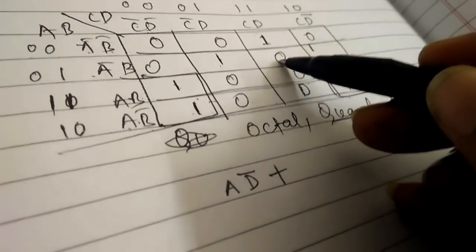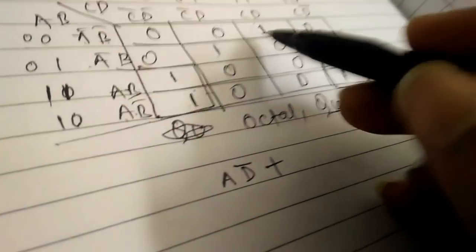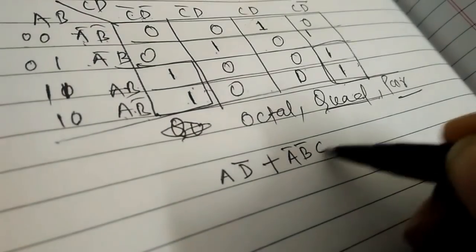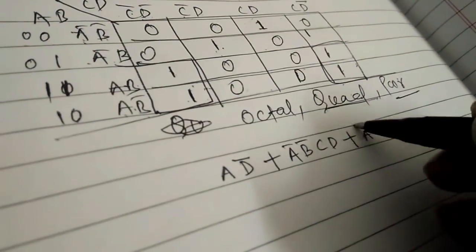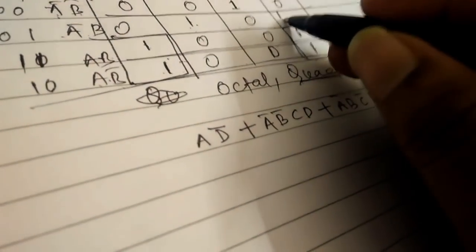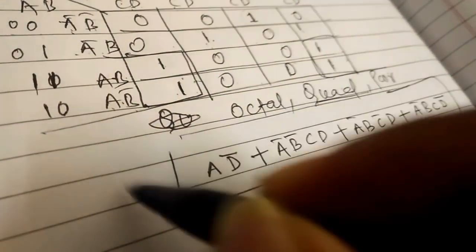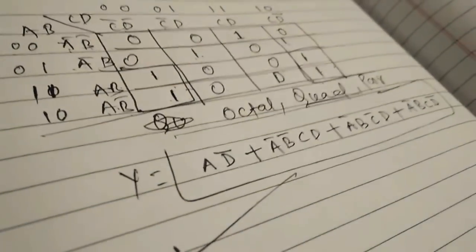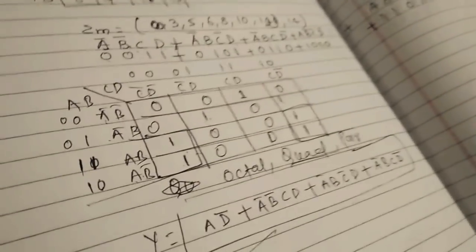Since there are no remaining pairs, quads, or octals for the isolated ones, each must be written individually. The final simplified expression is: A bar B bar C D + A bar B C bar D + A bar B C D bar. This is the simplification of the boolean expression using the K-map, which is one of the best methods to simplify boolean expressions.